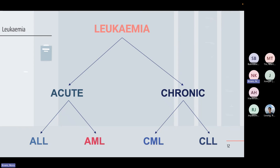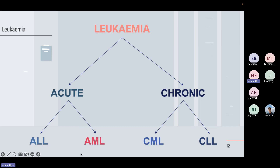Now moving on from anemias, we need to talk about leukemia. Leukemia is a cancer of the white blood cells. There are two main types: lymphoblastic leukemias, where the lymphoblastic precursors — which develop into B and T cells — are affected, and myeloblastic leukemias, where the myeloblast precursor — developing into granulocytes like eosinophils, basophils, and neutrophils — is affected. You can also classify leukemia as acute versus chronic.